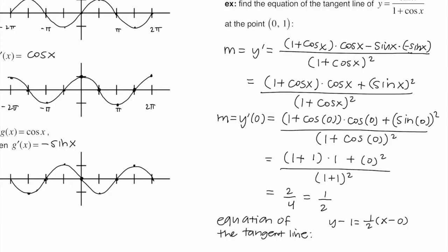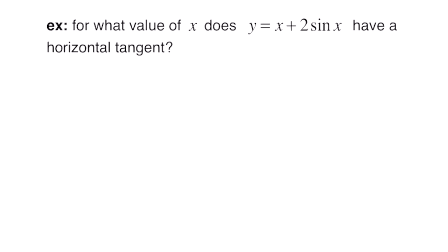Plugging the point and slope into point-slope form gives y minus 1 equals 1/2 times the quantity x minus 0. We can also write it as y equals 1/2 x plus 1. Any of these forms are fine.